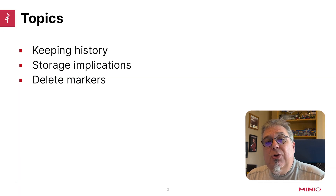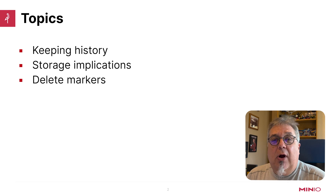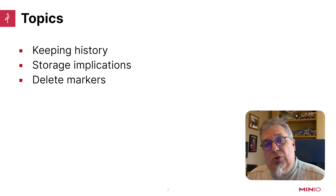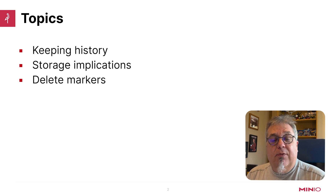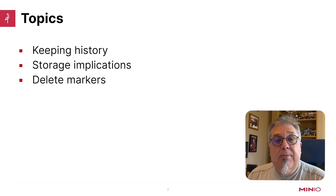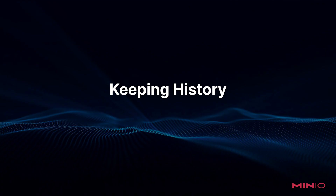Hi folks, Will from MinIO here with a little training on versioning. Today we're going to be taking a look at a few different things. We're going to look at how you can use versioning to keep a history of your objects, talk about some of the storage implications when you enable versioning, and we're also going to talk about delete markers, which is how we manage deleting objects when you have a versioned bucket.